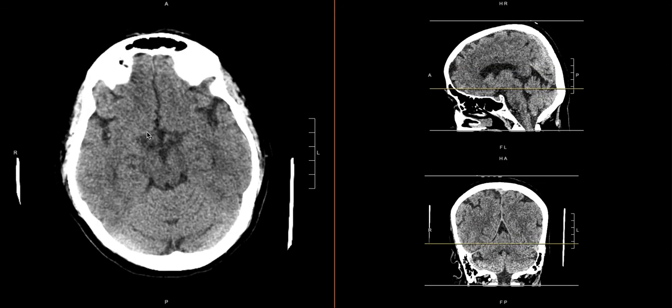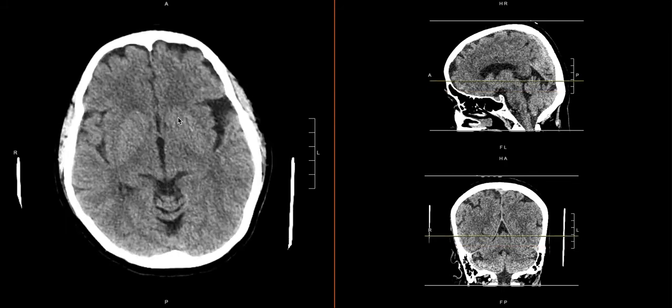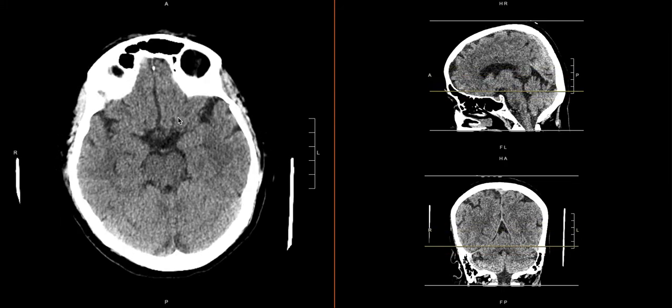This is just one example of looking at the dependent portions. The other videos in this series will go through some of the other structures, but this is a good way to hit the parts that are easy to overlook — going bottom-up, hitting the areas where blood is going to settle, and looking at the areas that will show you evidence of mass effect.